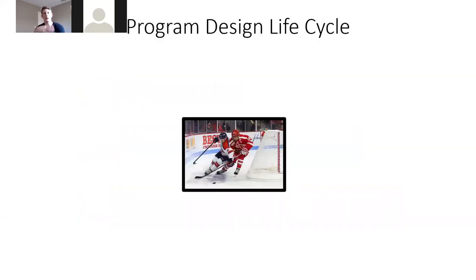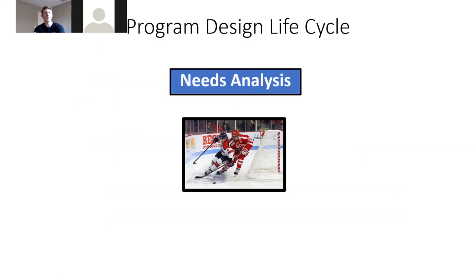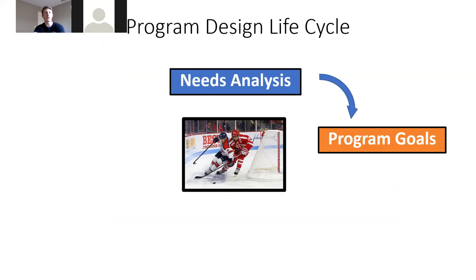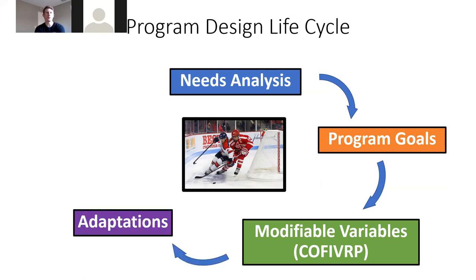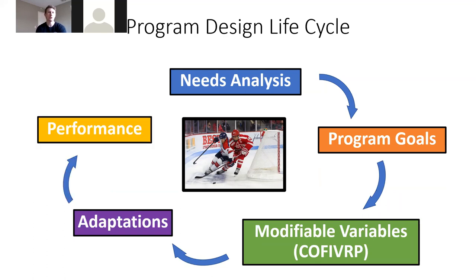The program design lifecycle: start with needs analysis, create goals based on those needs, then program modifiable variables — exercise choice, order, frequency, intensity, velocity, volume, rest periods, and progression. These lead to specific adaptations that contribute to performance on the field, court, ice, or track. Then return to the needs analysis using performance data — both in-game and assessment results — to create new goals and continue the cycle.